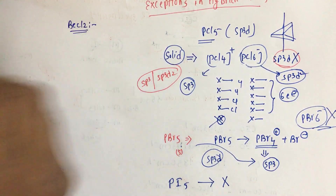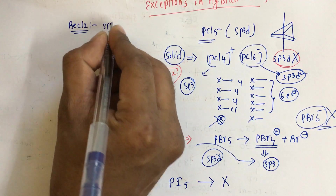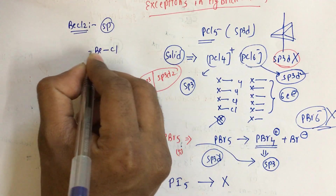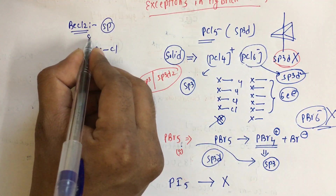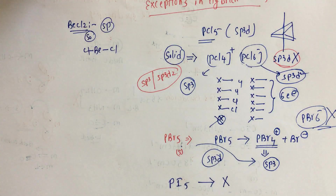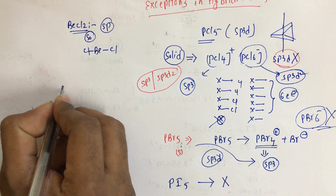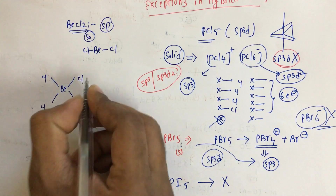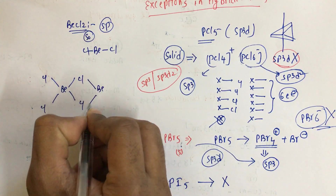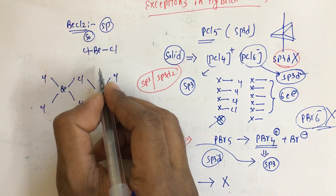Now for beryllium chloride, BeCl2 — this is frequently asked in examinations. In the normal state it has sp hybridization because it is linear. But in the solid state it undergoes sp3 hybridization, because each beryllium attaches to four chlorine atoms, forming a tetrahedral structure. So in the solid state the hybridization is sp3.